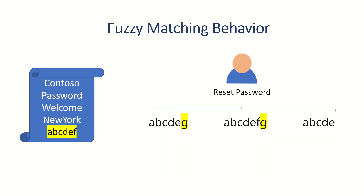The third process is called fuzzy matching behavior. If a banned password list contains 'abcdef' and the user tries to make a change to just one specific character — by adding, removing, or updating a single alphabet — the password reset request will still be blocked. Fuzzy matching catches attempts to slightly alter a banned password by changing only one character.